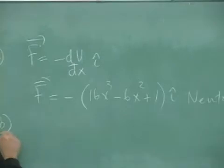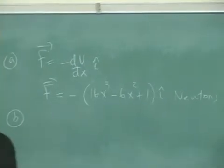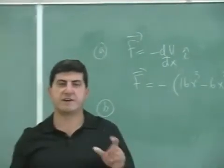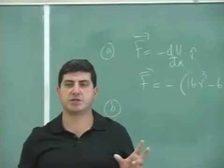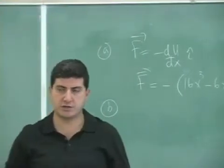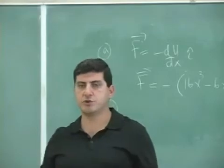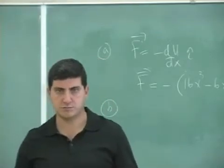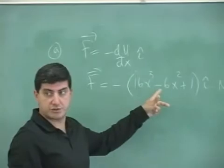Part B, find all points of stable and unstable equilibrium. So what we need to do is find out where the potential energy has local min, local max. So we take the derivative of the U, set it equal to zero.